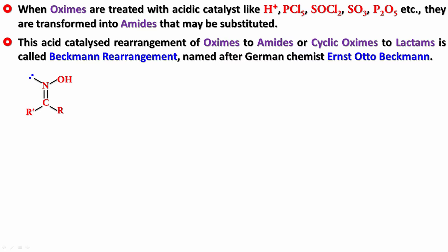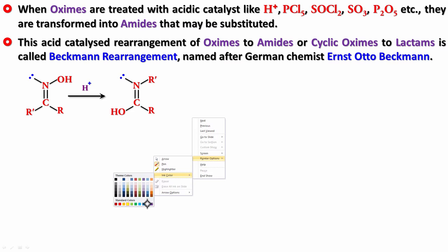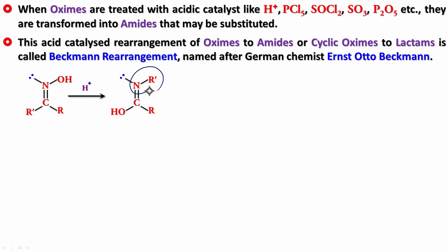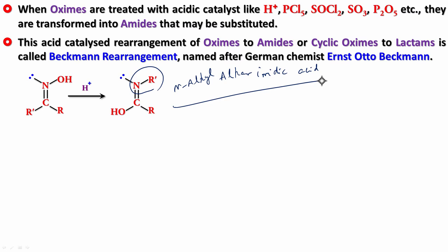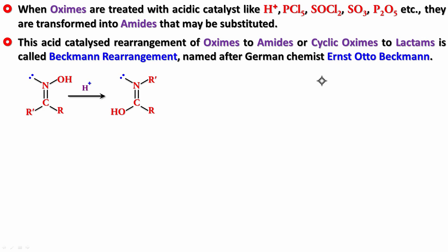This is an oxime where R and R' could be a hydrogen or the same or different alkyl groups. This oxime reacts with an acid — you have to heat it also — and first it forms a compound called N-alkyl-alkin-imidic acid. But not to worry, this is not of much interest here because this will tautomerize.